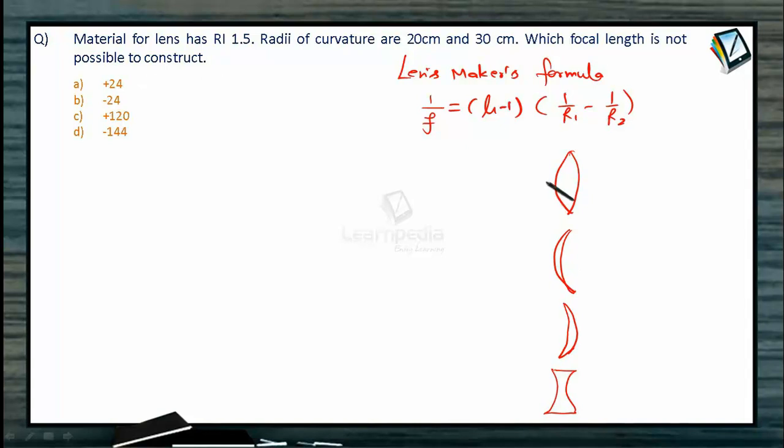So in this case if we apply the formula, this is 20 cm, this is 30 cm. Then focal length 1/f will be μ-1. μ-1 is 0.5 into 1/R1. For using sign convention you have to assume one direction as the positive. So let us suppose that this direction is the positive direction and we are approaching the lens from this side. So the first surface we encounter is R1 and the second surface we encounter is R2.